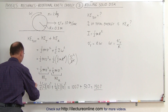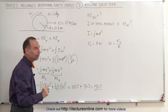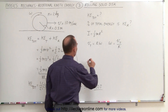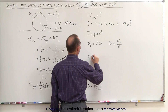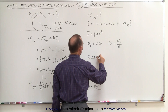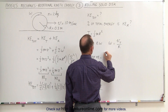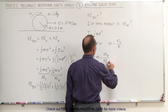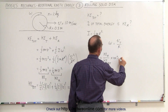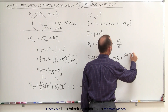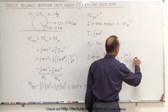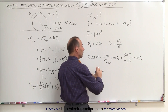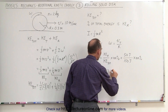So the total kinetic energy is equal to 150 joules. What percentage of that is made up by the rotational kinetic energy? The percent of rotational kinetic energy is equal to the rotational kinetic energy divided by the total kinetic energy times 100%. In this case, 50 joules divided by 150 joules times 100%, which gives 33.3 percent.